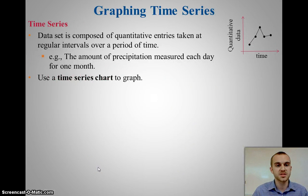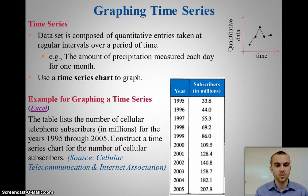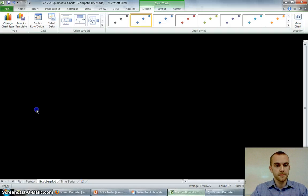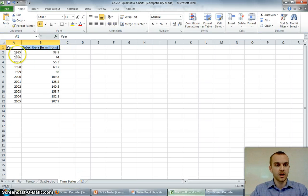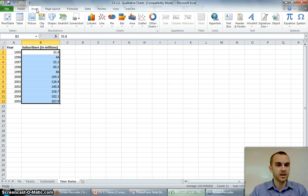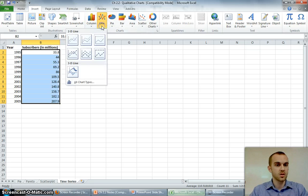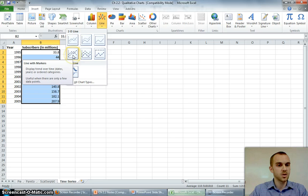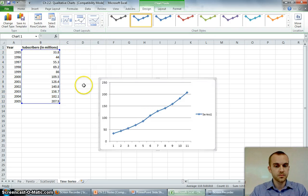The last one we'll look at is the time series. And the time series is going to connect the dots to see if there's any types of patterns as we go over a period of time. For example, say that we're looking at the cell phone subscribers in millions from 95 to 2005. Again, we have our data here. This time, I'm just going to highlight the subscribers because I'm doing this timeline. I don't need the year actually highlighted. And I'm going to do a line. And I want one that has the markers included.